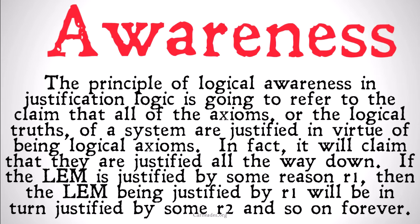So if the LEM is justified by some reason R1, then the LEM being justified by R1 will in turn be justified by some R2. And that R2 justifying R1 justifying the LEM will in turn be justified by some R3, and so on, forever.